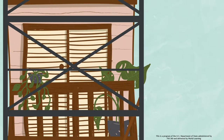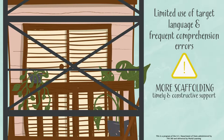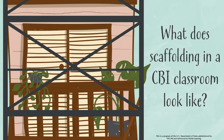For instance, students' limited use of the target language and frequent comprehension errors can be the signals that teachers need to provide more scaffolding. Through the provision of timely and constructive support, scaffolding allows students to engage in meaningful learning and lower their anxiety levels. What does scaffolding in a CBI classroom look like?